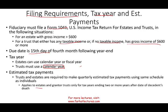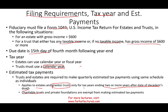Estimated payments apply to estates and grantor trusts. A grantor trust is when you are all three roles — the donor, the trustee, and the beneficiary — essentially putting your own money into a separate legal entity to manage it. Estimated payments apply only to tax years ending two or more years after the decedent's death, because generally assets won't sit in an estate too long before being distributed. Charitable trusts — where you put money away to give to charities — are exempt from making estimated payments.